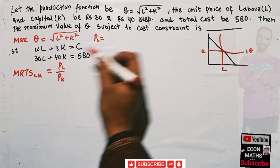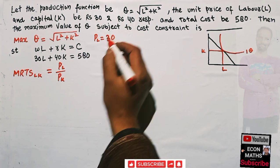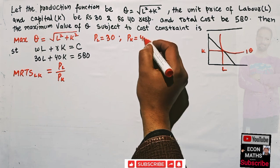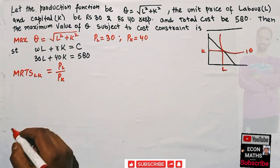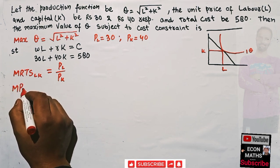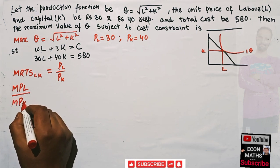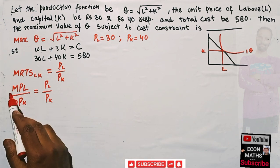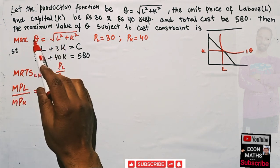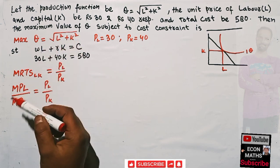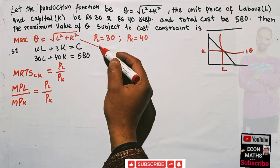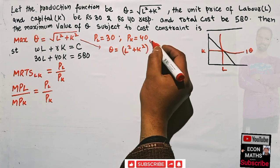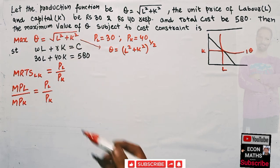The price of labor is 30 (the wage rate w) and the price of capital is 40. Now, using this condition, the marginal rate of technical substitution means MPL upon MPK equals p_L upon p_K. We can rewrite the production function as q = (l² + k²)^(1/2) — same thing, just expressing the square root as a power.